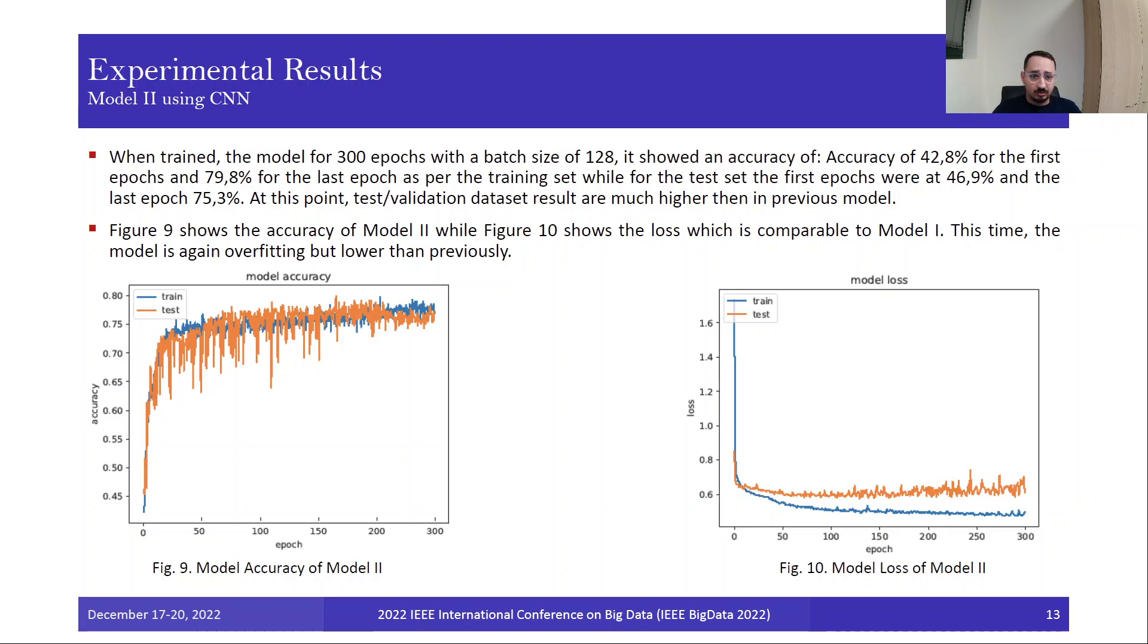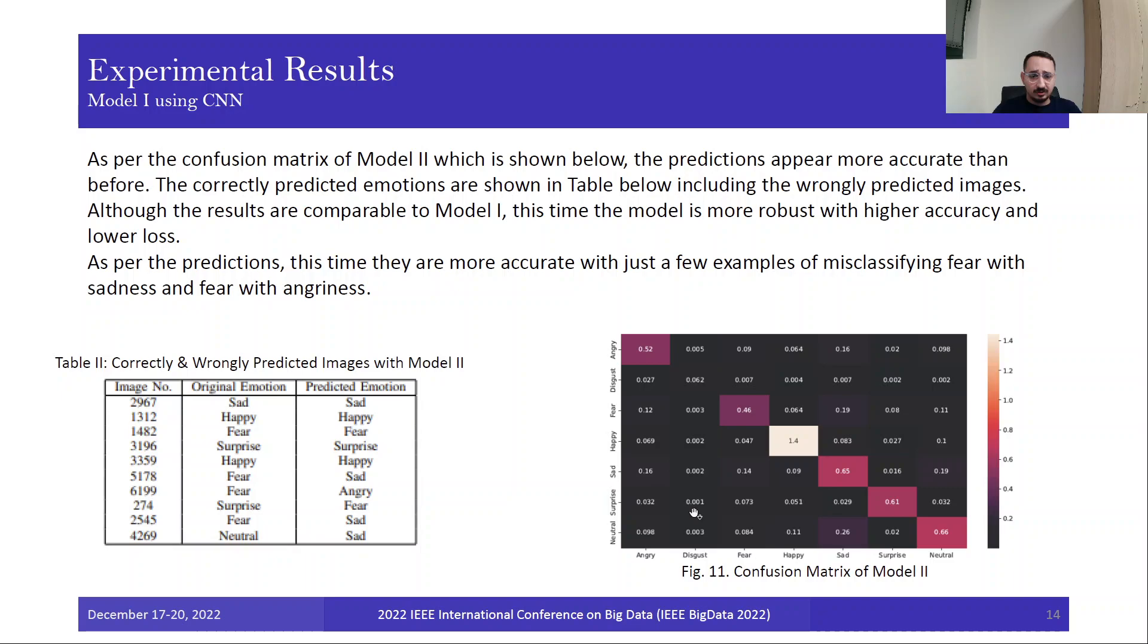This model, when trained for 300 epochs with batch size of 128, showed an accuracy of 42% for the first epoch and 79% for the last epoch for the training set, while for the test set the first epoch was at 46% and the last epoch was 75.3%. At this point, the test and validation result peaks higher than in the previous model, as we can see from here. It peaks around 79%, the performance is higher. As for the model loss, it is significantly lower than the first model. This time the model is overfitting again but it's lower than previously.